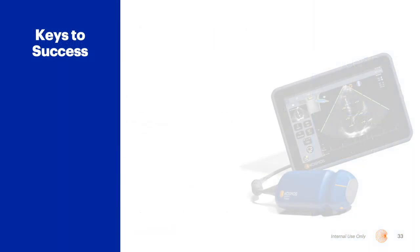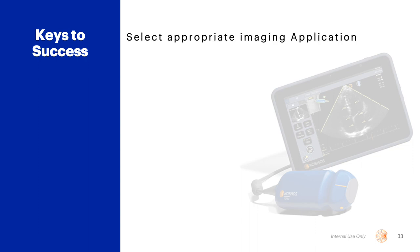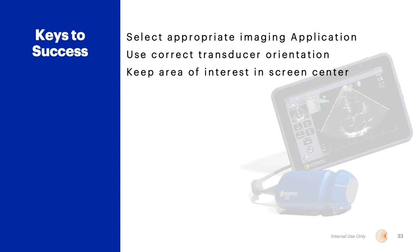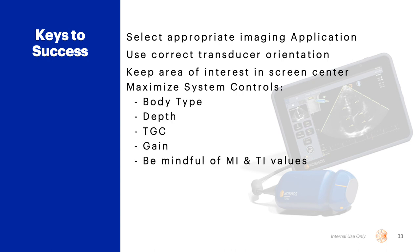Keys to success for ultrasound imaging include: selecting the appropriate imaging application, using the correct transducer orientation, keeping the area of interest in the screen center, and being certain to maximize the system controls — to include body type, depth, TGC, and gain — while being mindful of the MI and TI values.